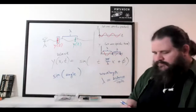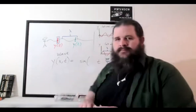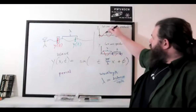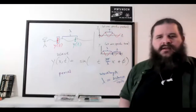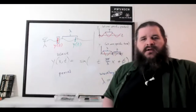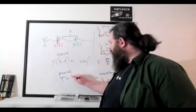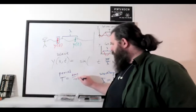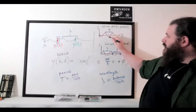We can do the same thing for time. One full cycle worth of time is the period. One period is the amount of time it takes for one full cycle to occur. You can find it on the time graph as the amount of time from peak to peak or trough to trough — written as capital T. So multiplying time by two pi over the period converts time into an angle, just like multiplying position by two pi over wavelength.